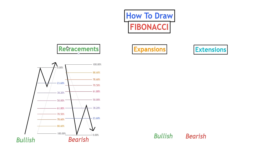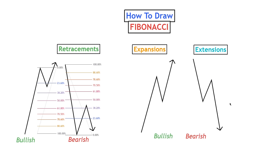Once again we need to start with either a bullish or bearish impulsive wave, but the difference here is that we're no longer concerned about how much price is retracing for the corrective wave. What we're more concerned about is the following impulse wave, to see potential Fibonacci levels that could be tested if price were to continue in the direction of the trend — which is why you typically only want to use these if you believe price is going to continue beyond the impulsive wave.